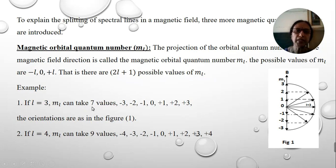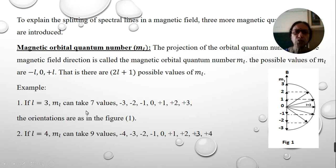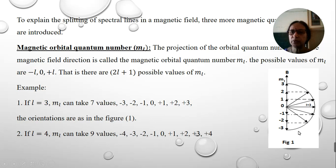For example, if L=3, M_L can take 2(3)+1 = 7 values: −3, −2, −1, 0, +1, +2, and +3. The orientations of these vectors are represented in a diagram. Similarly, if L=4, substituting gives 9 values, which are all listed accordingly.